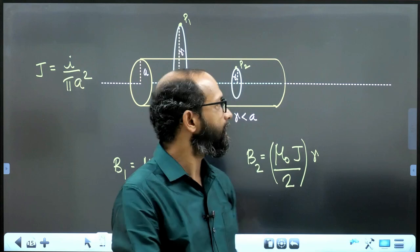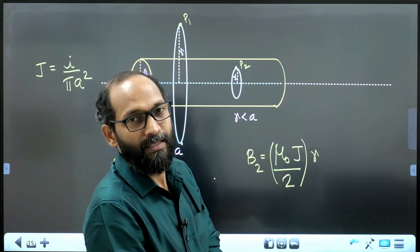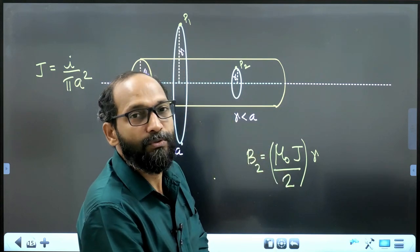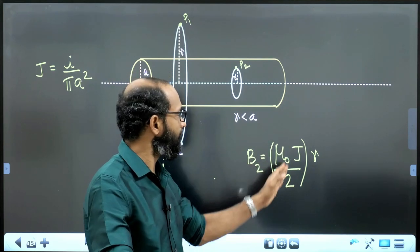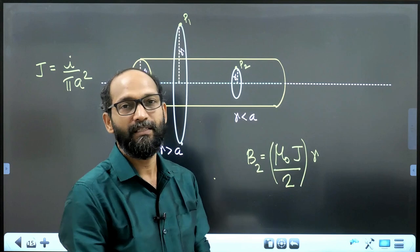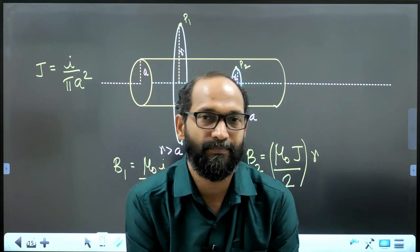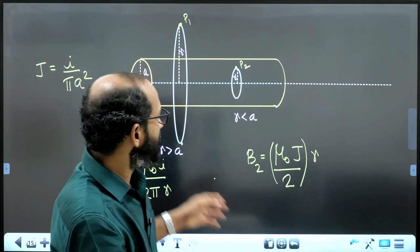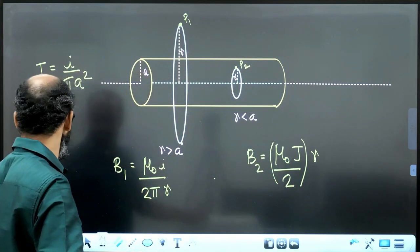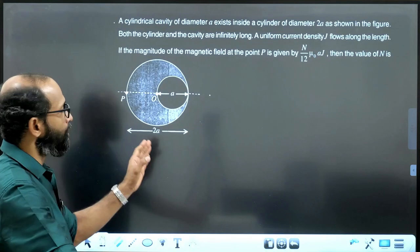But for any points inside that wire, field proportional to distance. And that is also from Ampere's law, mu0J by 2 into r where J is the uniform current density. The case is only used for uniform current density. And let us apply these equations to get the answer to this problem quickly.